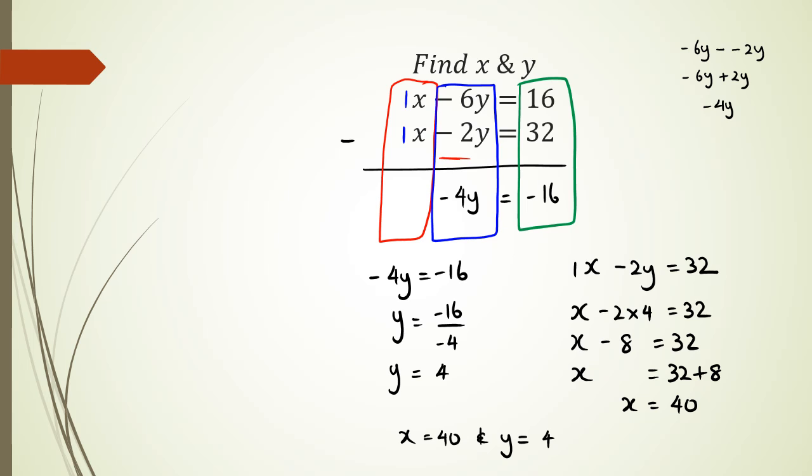A good thing to do is always check your answer with the equation that you did not substitute with. I didn't substitute with the first equation, which was x minus 6y equals 16. If I substitute 40 and 4, 40 minus 6 times 4 should equal 16. I've got 40 minus 24 equals 16, and then 16 equals 16. That's how I know I've got the correct two values for x and y.